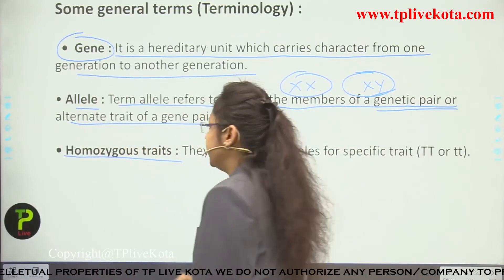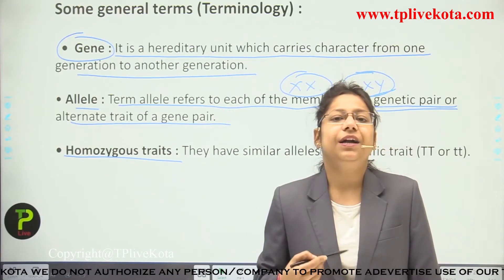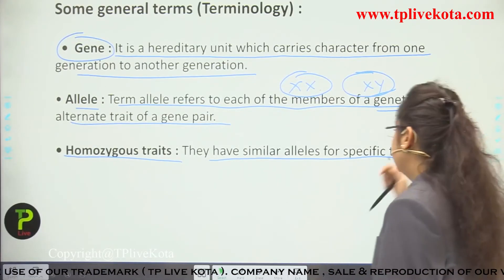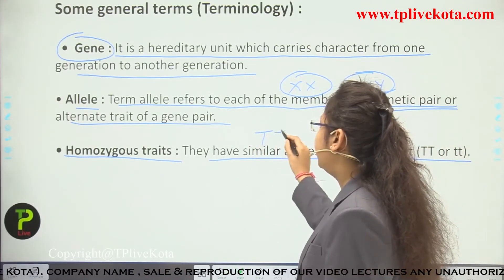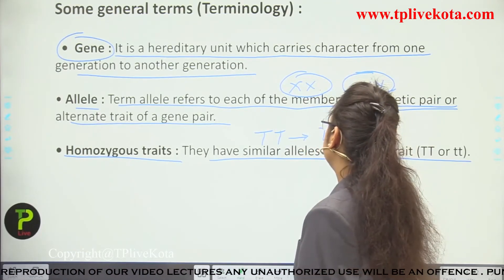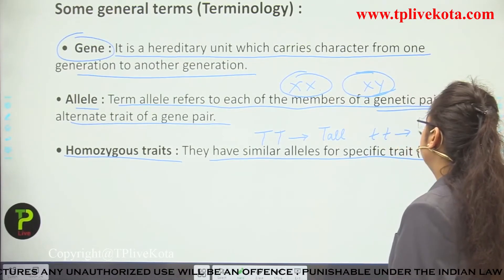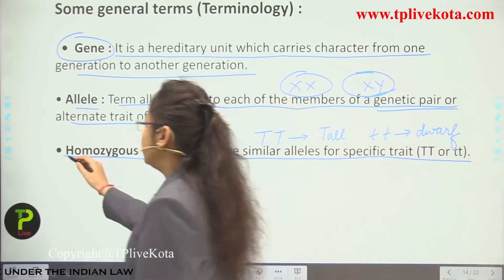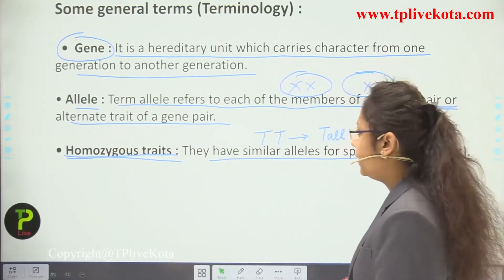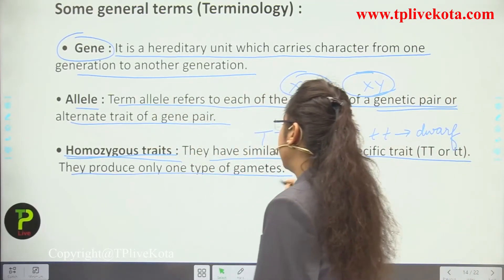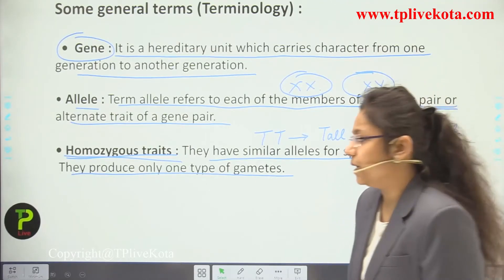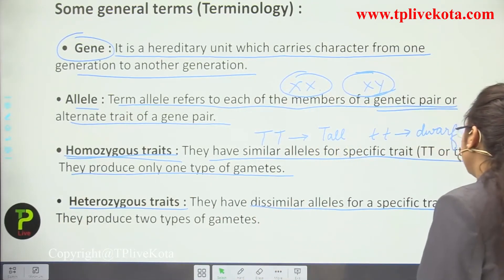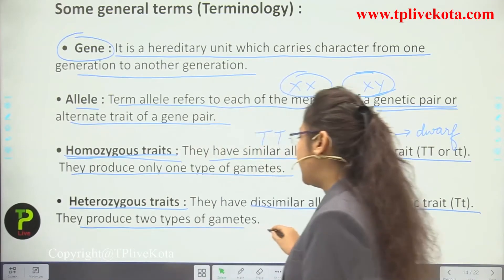Homozygous traits mean similar type of characters — they have similar alleles for a specific trait. We use capital T and capital T for tall, and small t and small t for dwarf — these are homozygous, meaning similar. They produce only one type of gamete. Heterozygous traits have dissimilar alleles for a specific trait and produce two types of gametes — for example, capital T and small t, where capital T is dominant so the character will be tall, but the individual carries two types of gametes.